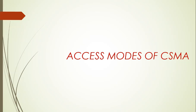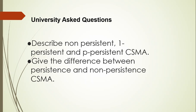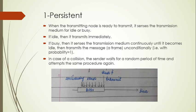Going forward to the access modes of CSMA, the questions asked in the university are as follows. The first is 1-persistent. In this method, after the station finds the line idle, it sends its frame immediately. This method has the highest chance of collision because two or more stations may find the line idle and send the frames immediately.